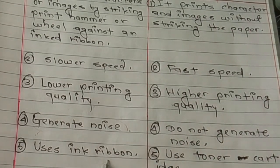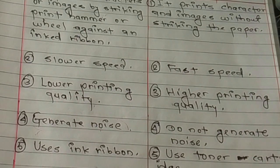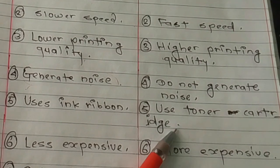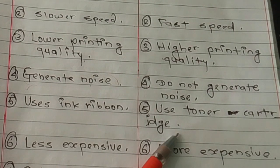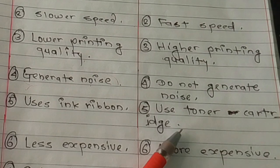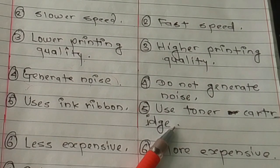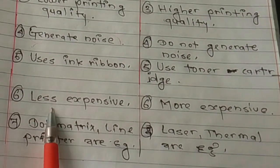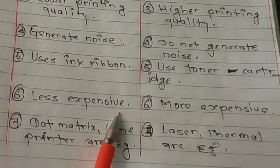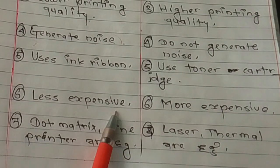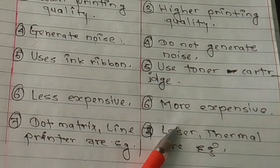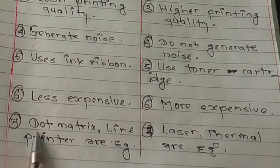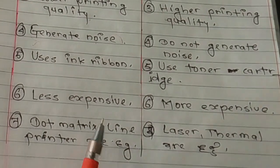In terms of consumables: impact printers use a ribbon, while non-impact printers use a toner cartridge.